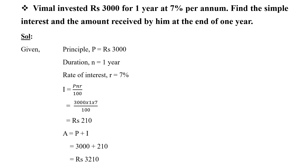Vimal invested Rs. 3000 for one year at 7% per annum. Find the simple interest and the amount received by him at the end of one year. P is equal to Rs. 3000, n is equal to 1 year, and R is equal to 7%. Simple interest I is equal to PNR divided by 100, which is 3000 into 1 into 7 divided by 100, which is equal to Rs. 210.